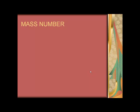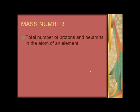Mass number: The total number of protons and neutrons in an atom of an element is called the mass number of that element.